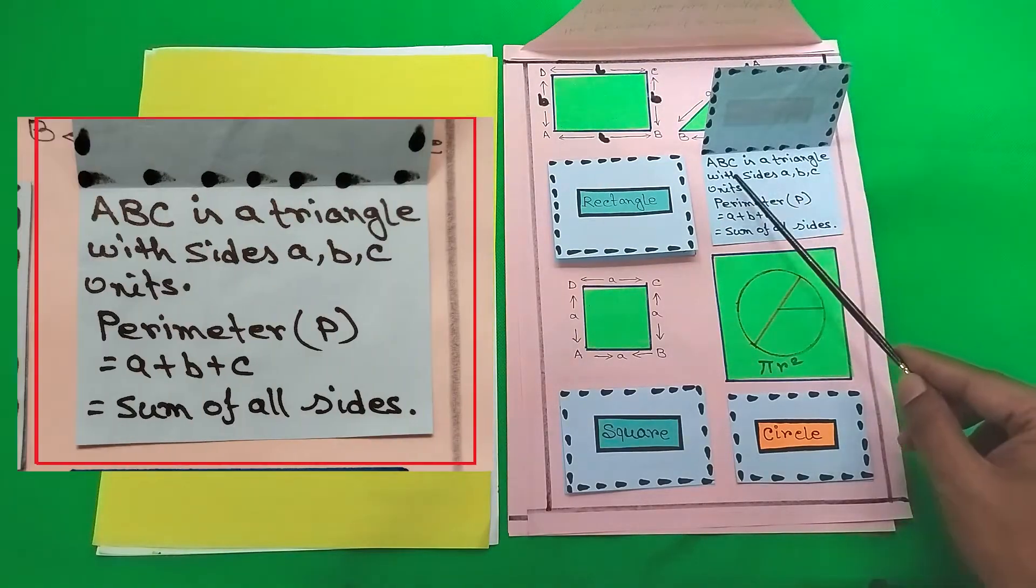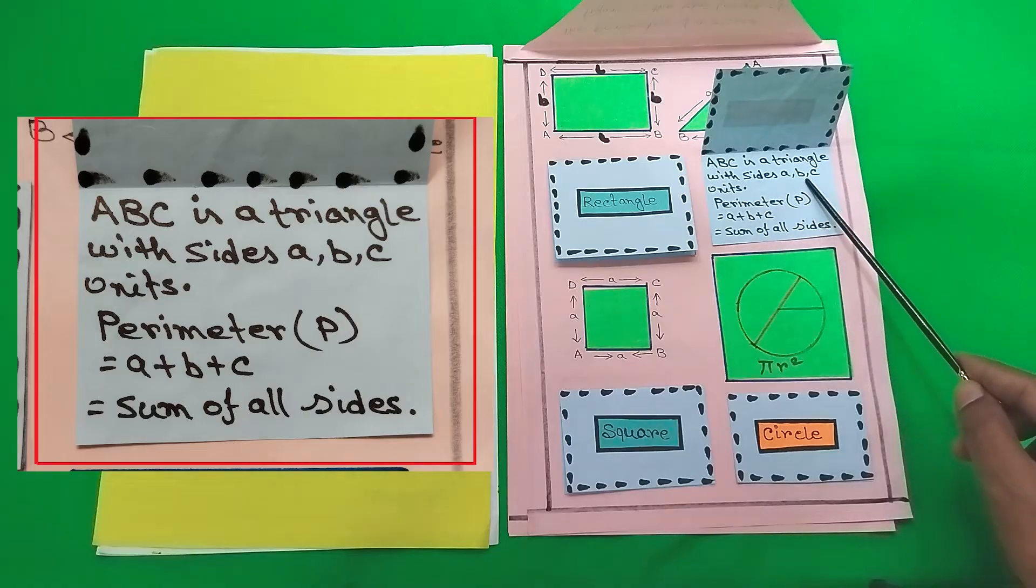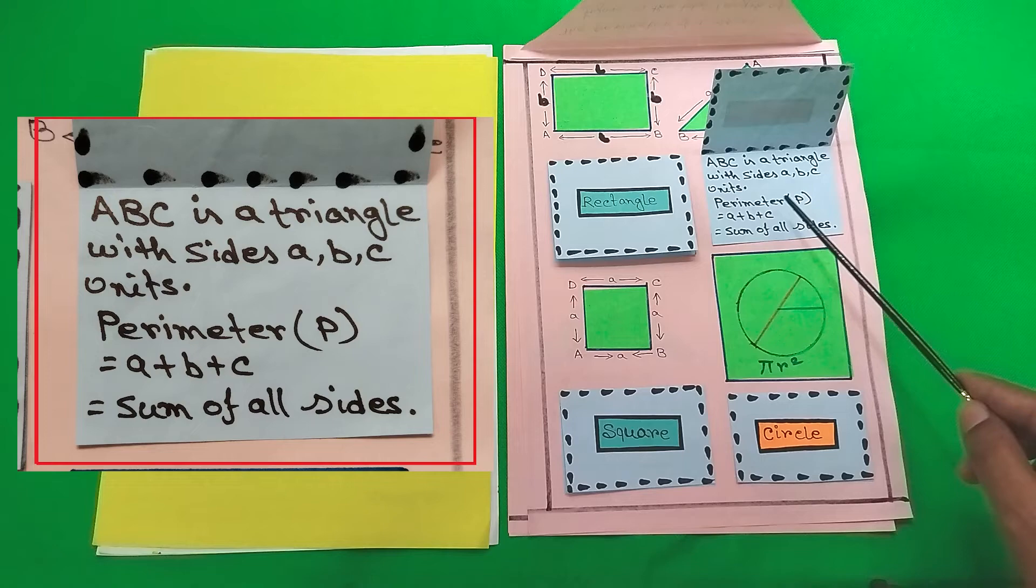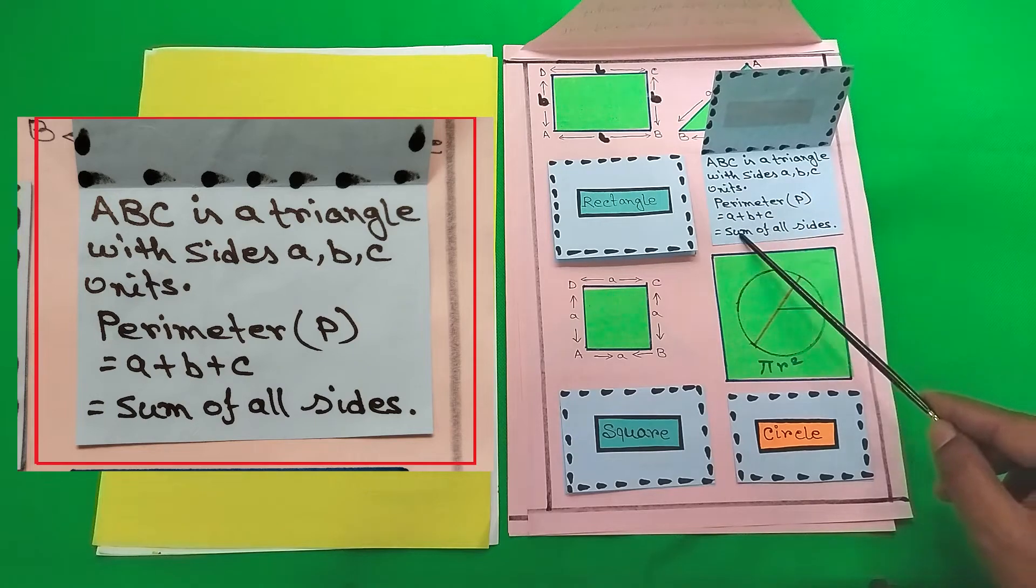Next we have the triangle. ABC is a triangle with sides A, B, C units. Perimeter P equals A plus B plus C equals sum of all sides.